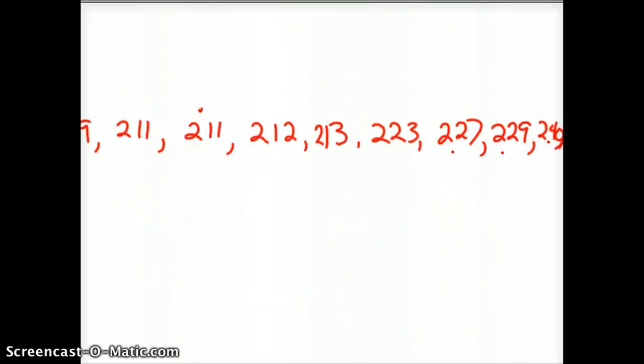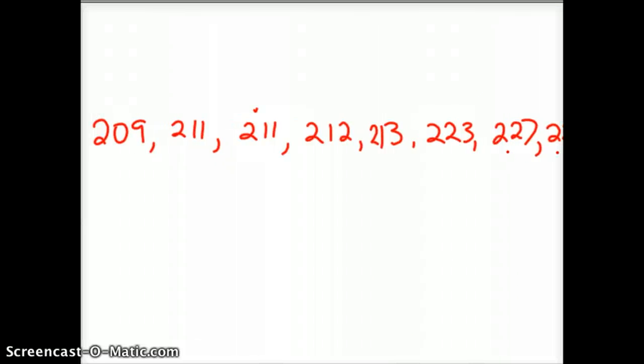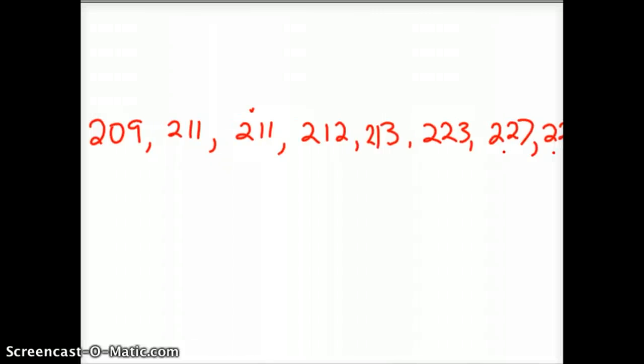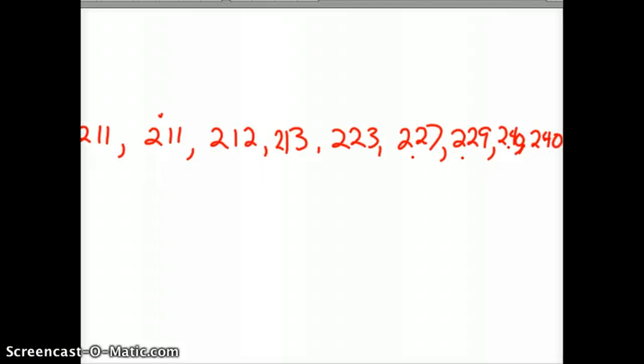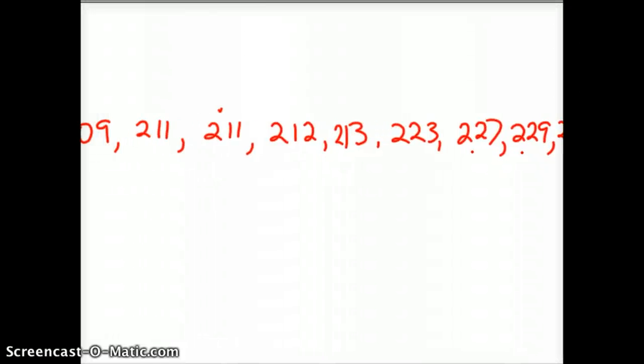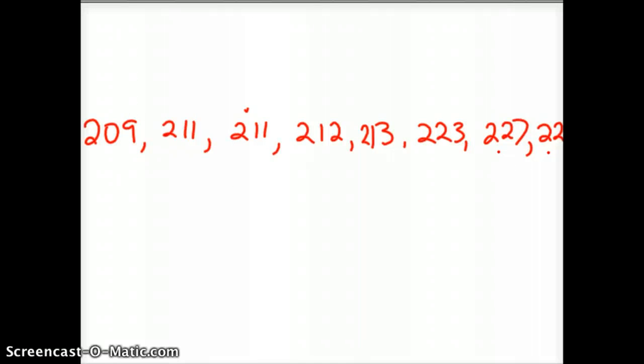So here's another set of data. We've got 209 on up to 240, and there's 10 numbers. So it's already listed as an array. Everything's in the right order.